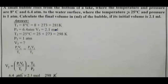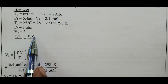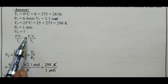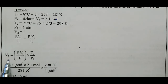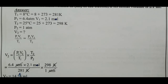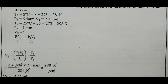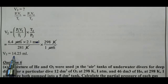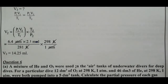According to the combined gas law: P1V1/T1 = P2V2/T2. Rearranging to solve for V2: V2 = (T2/P2) × (P1V1/T1). Substituting P1 = 6.4, V1 = 2.1 mL, T1 = 281 K, T2 = 298 K, P2 = 1 atm. Solving this gives Volume = 14.25 mL.